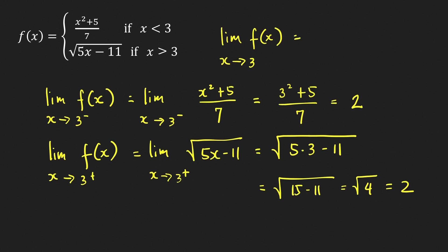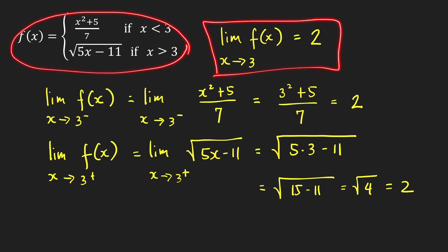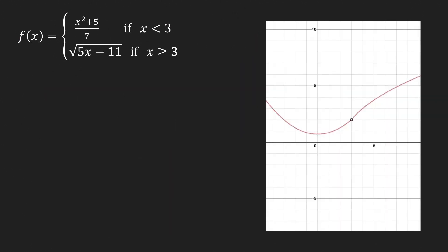Since the one-sided limits are equal, the two-sided limit equals 2. Note that this function is not defined at x = 3, but we still have a limit — when finding limits, we only care about function values when x is close to 3, not at 3 itself. The graph confirms this: using the wall method, both sides approach the same single point with y-coordinate 2.